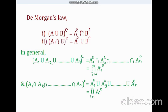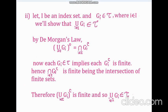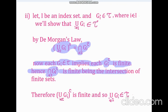So here, using De Morgan's law, we can write the complement of union of g_i's equals the intersection of the complement of each g_i. Now the fact that each g_i belongs to tau implies that the complement of each g_i is finite. Hence, the intersection of the complement of each g_i is also finite, being the intersection of finite sets. Hence the complement of union of g_i's is finite, and so union of g_i belongs to tau. Therefore, tau is closed under arbitrary union.